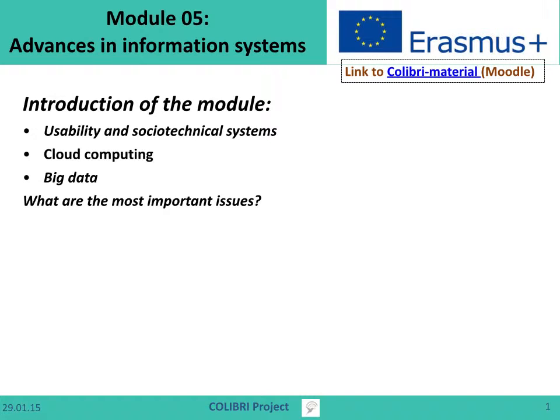Welcome to the Module 5 introduction. Module 5 is Advances in Information Systems. The module consists of three main areas: usability and socio-technical systems, cloud computing, and big data. We want to know what the most important issues are in each of these areas.